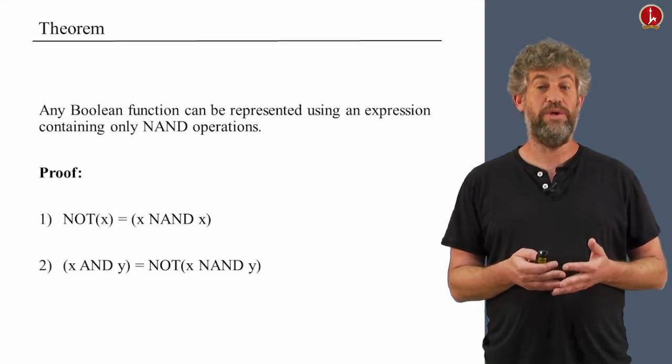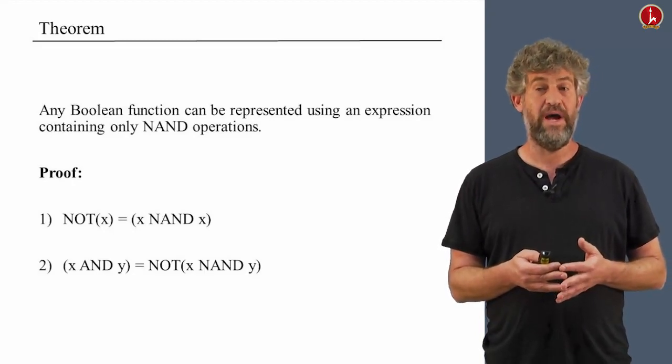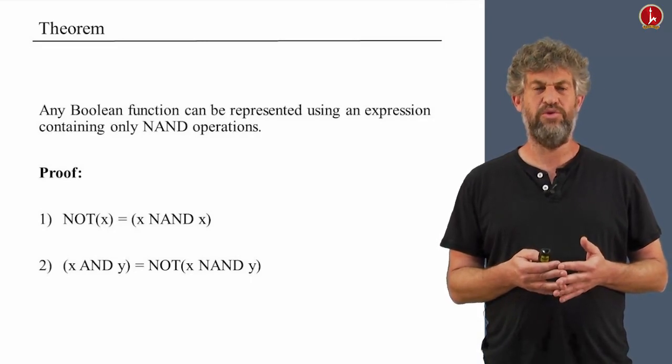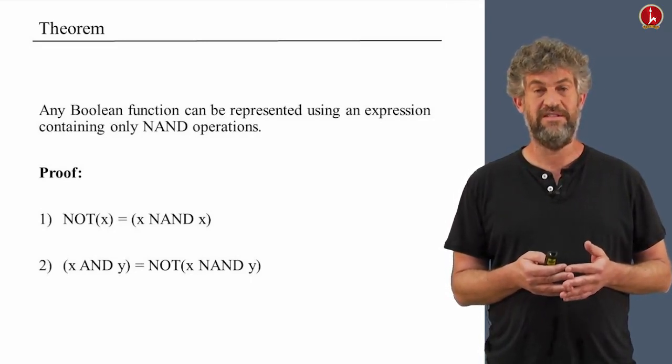The second part we need to show, how do we do AND? Well, x and y turns out to be NOT of x NAND y. But how do we have NOT? Well, we've just seen that you can do NOT with NAND itself.